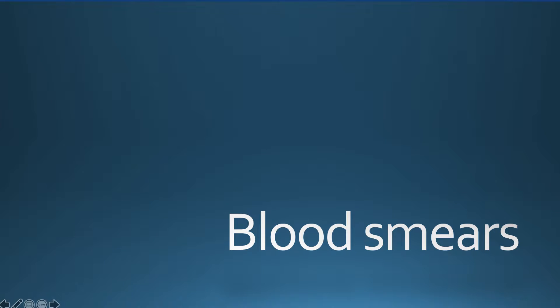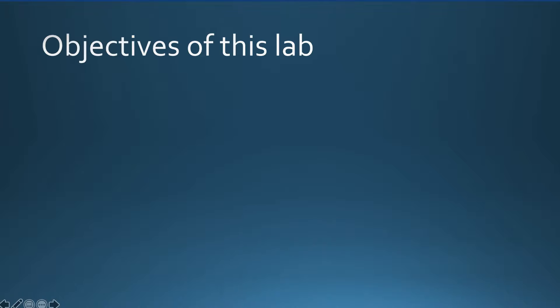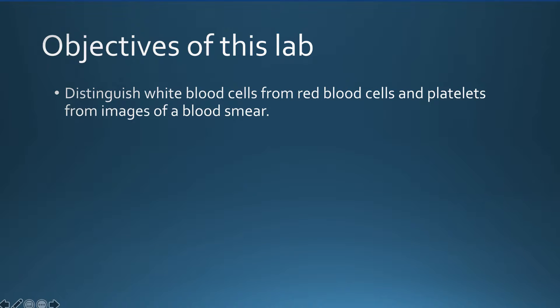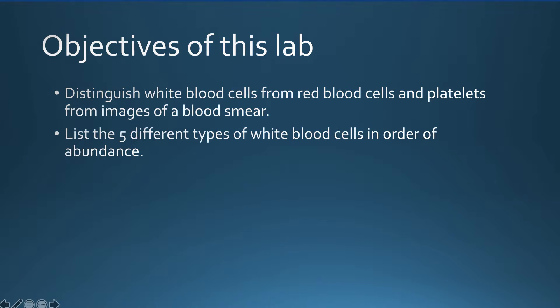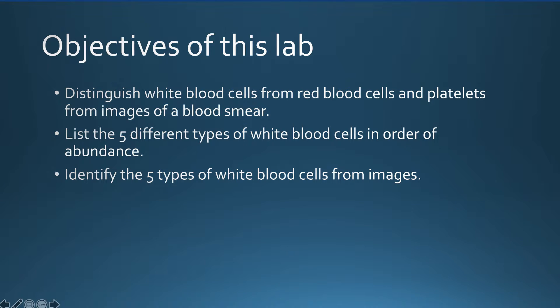In this lab activity, we will look at blood smears. At the end of this lab, you should be able to distinguish white blood cells from red blood cells and platelets from images of a blood smear, list the five different types of white blood cells in order of abundance, and identify the five types of white blood cells from images.